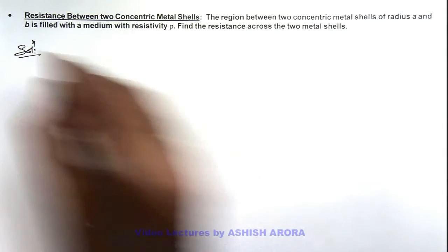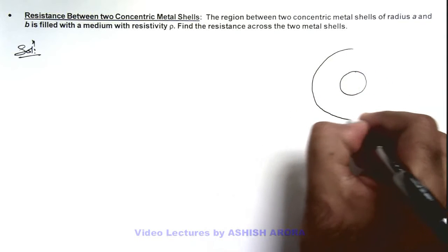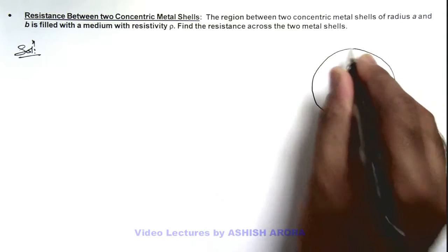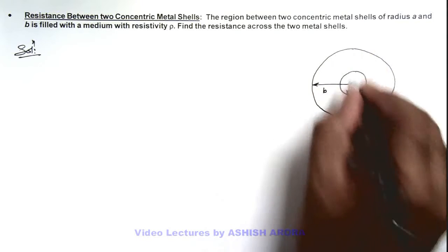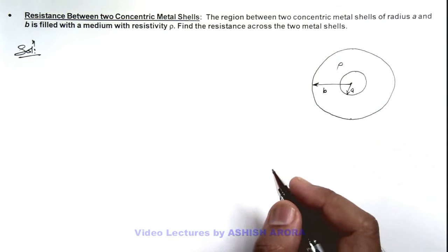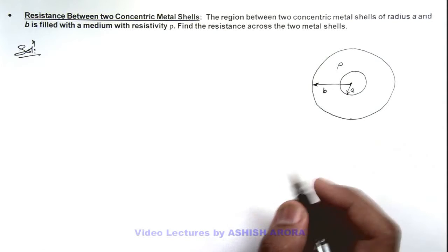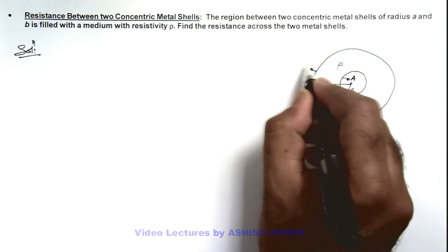Here in this situation, we are having these two metal shells which are concentric, and the radii are a and b. The region between the shells is filled with the resistivity ρ. Here we are required to find the resistance between these two shells, that is across terminals a and b.